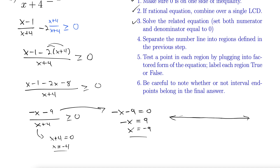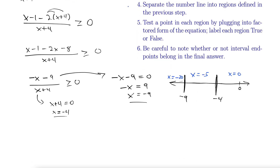Now separate the number line into regions. We mark zero as a reference point, then negative four and negative nine. We pick test points: x equals negative 20 for the leftmost region — anything less than negative nine works — x equals negative five for the middle region, and x equals zero for the rightmost region.